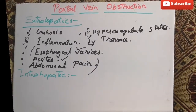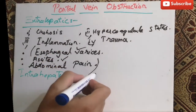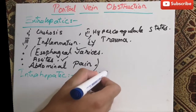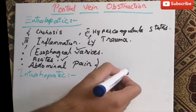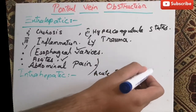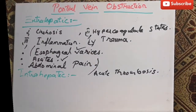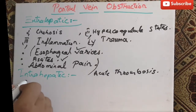Intrahepatic portal vein obstruction mostly occurs due to acute thrombosis. Intrahepatic portal vein obstruction mainly occurs due to acute thrombosis, and it does not cause ischemic infarction.